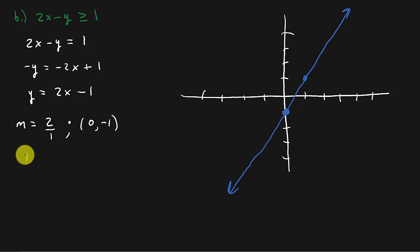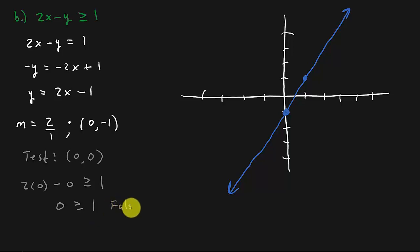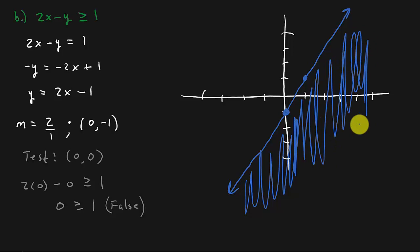Now let's get our test point. We can choose any point not on the line. Since the line does not go through (0, 0), I'll choose (0, 0). Plugging in: 2 times 0 minus 0 is greater than or equal to 1, so 0 is greater than or equal to 1. That is a false statement. I chose a point on this side of the line and got false, so I shade the other side.